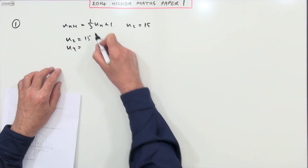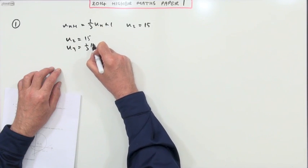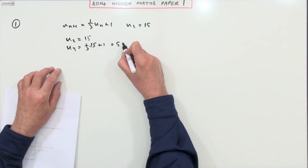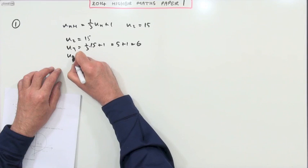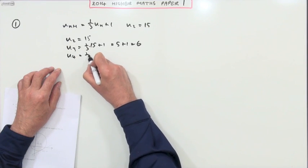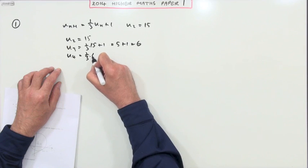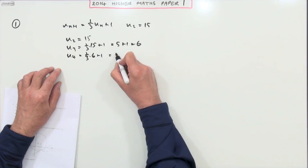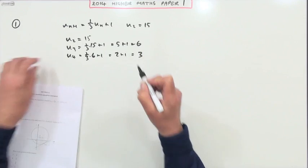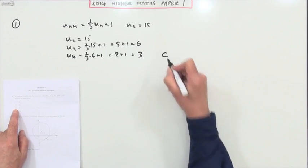That's a third of 15 is 5 plus 1, which is 6. One more step: u4 will be a third of that, a third of 6 plus 1. A third of 6 is 2, plus 1 is 3, and 3 is answer C.